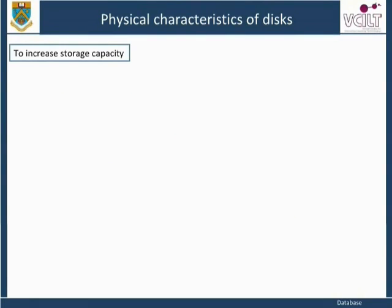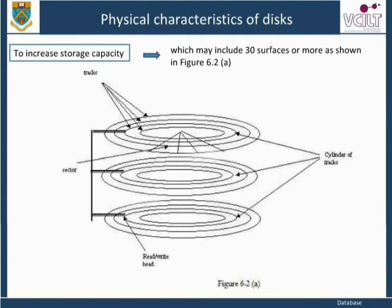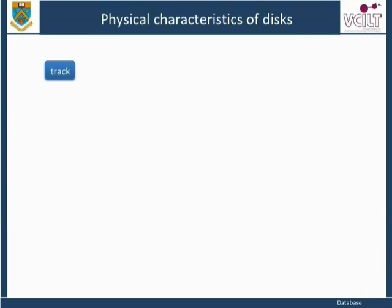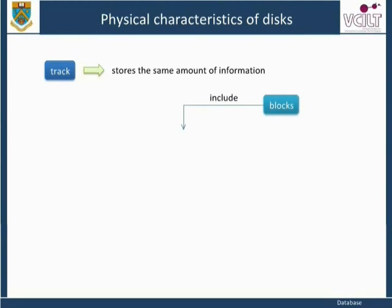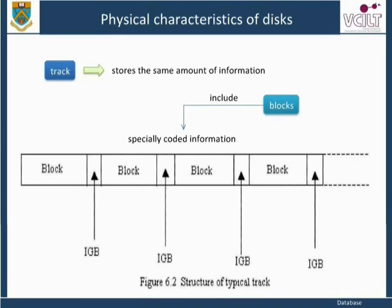To increase storage capacity, disks are assembled into a disk pack, which may include 30 or more surfaces, as shown in Figure 6.2A. Each track typically stores the same amount of information and can be divided into equal-size blocks, which include specially coded information to determine which block on the track follows each of the gaps, as shown in Figure 6.2B.